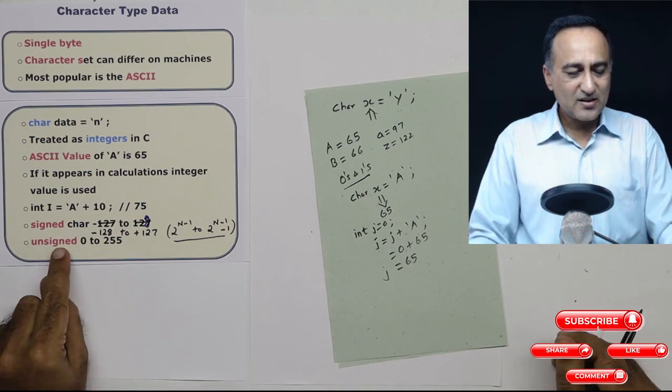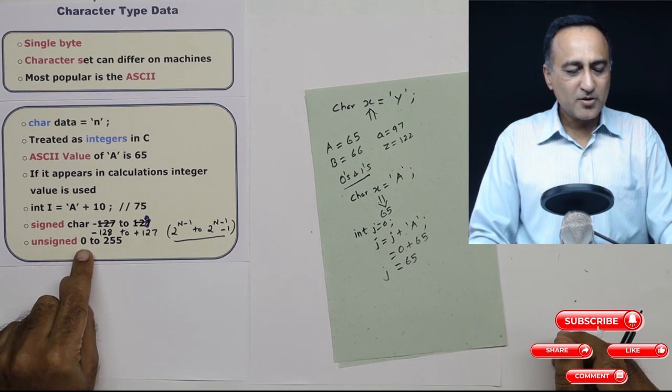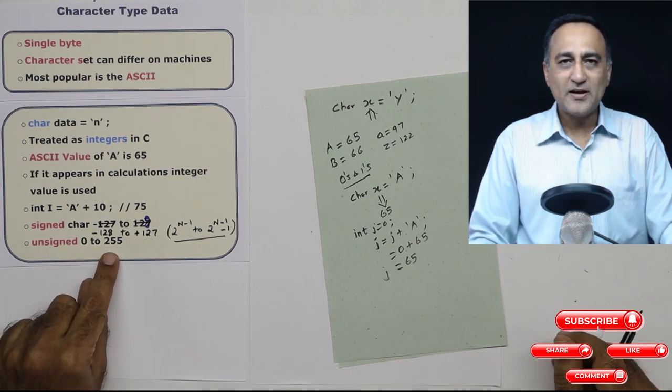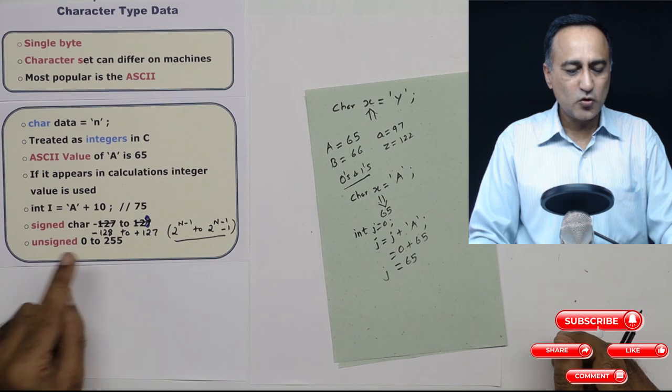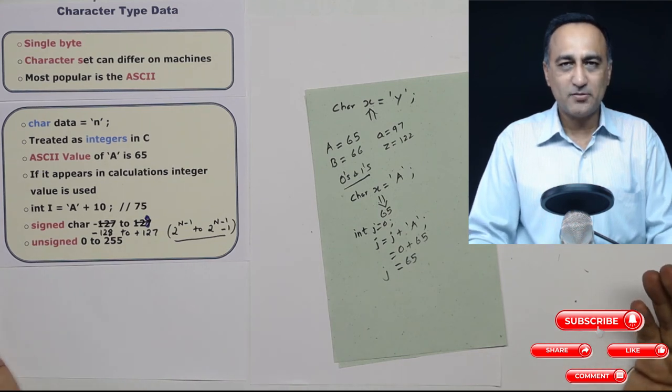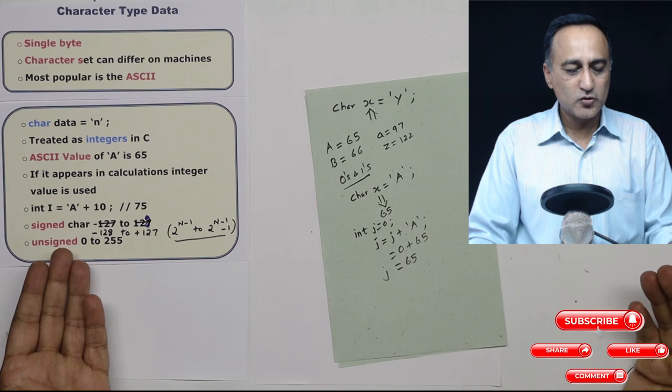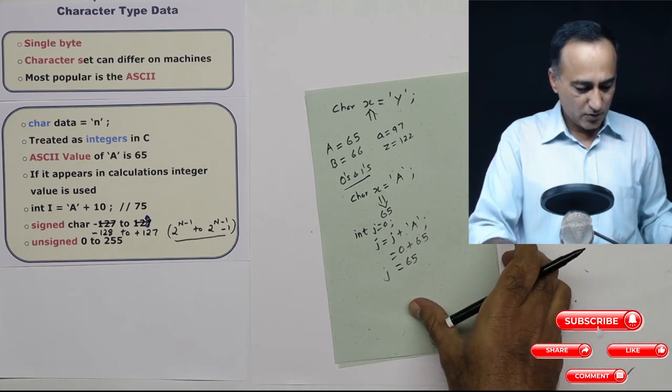And unsigned char is going to represent from zero to 255. Because in unsigned, there is no sign required, it is going to use all the positive sides only.